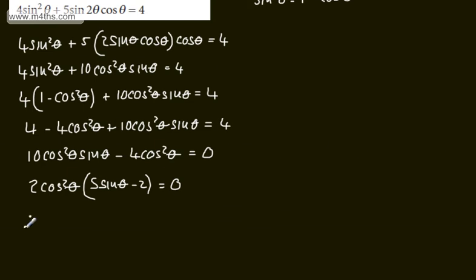So we can write at this stage, therefore, now if cos squared theta is equal to 0, we can say cos theta is equal to 0 or we've got sine theta will be equal to 2 over 5. Let's deal with the easier one to begin with.